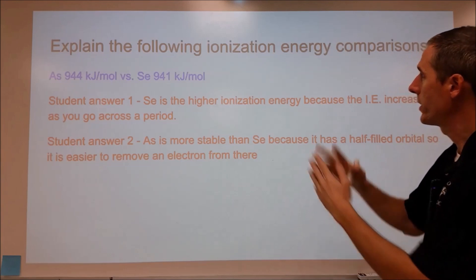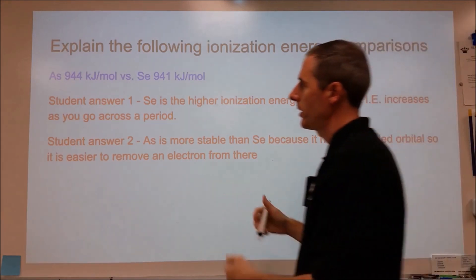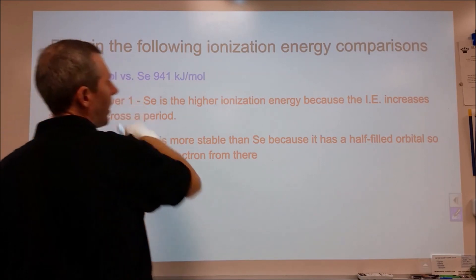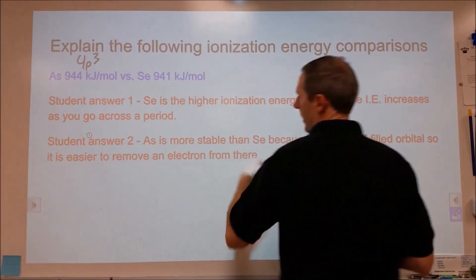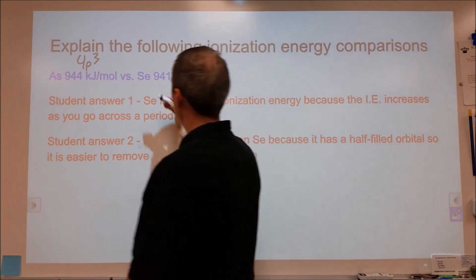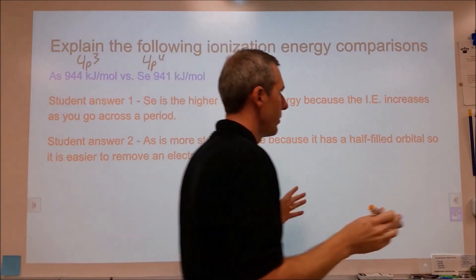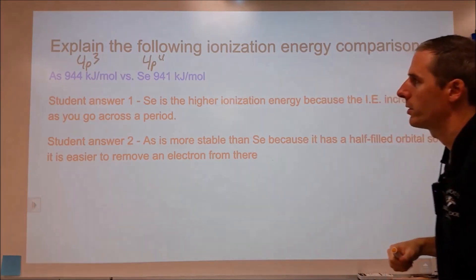Here we have a question to explain the following ionization energy comparisons. We have arsenic, which is 4p3 electron configuration at the end, and selenium, which is 4p4. Of course we have all the way up 3d10, 4s2, and all of the 1, 2, and 3 energy levels filled.